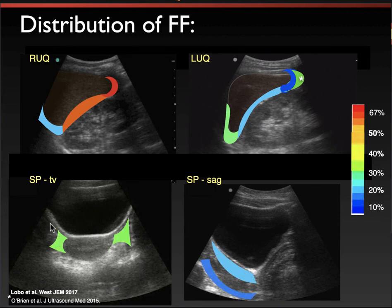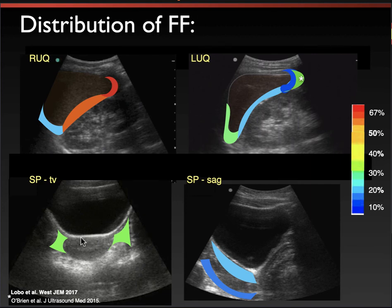Down in the pelvic area, you can find fluid either on the sides of the bladder or posterior to the bladder. At the UW, we only require the posterior sagittal view with a sweep through, because most people catch free fluid more easily on that exam. But if you have any questions, it's a great idea to flip that probe and take a look at the pelvis in a different plane — sometimes you'll see free fluid that you would have missed in the sagittal view.